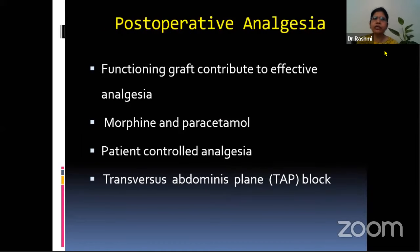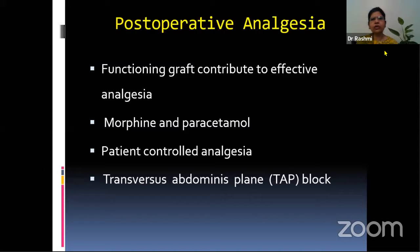Most patients can be extubated on the table. Once there is graft function and adequate urine output, most of the drugs that we have given get washed out, and the patient is able to breathe spontaneously after giving the reversal agent. For post-operative analgesia, a functioning graft itself contributes to effective analgesia. Besides that, we can give morphine or paracetamol. Patient-controlled analgesia is also a good choice. Recent articles suggest transversus abdominis plane block can be given to these patients, but we have to keep in mind that these patients are coagulopathic and it's a blind procedure, so one has to be careful.